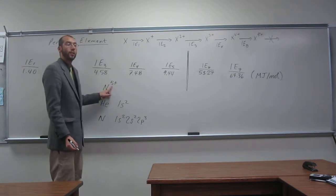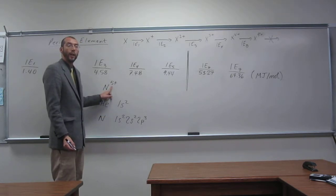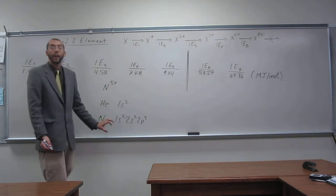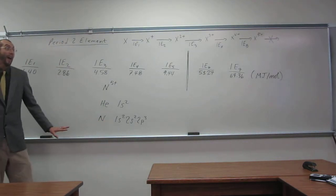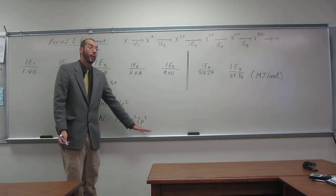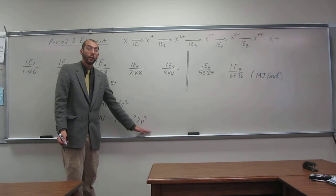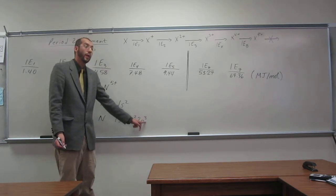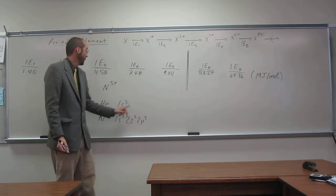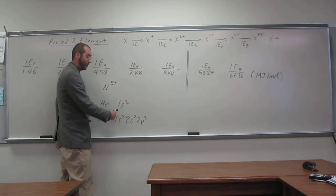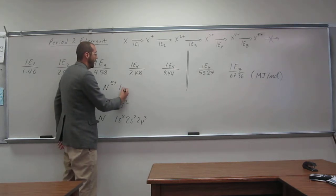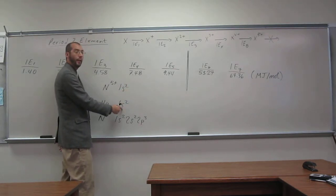So nitrogen plus 5 or 5 plus is going to be nitrogen without how many electrons? 5. So they're going to be the valence electrons, so we're removing 3 from the p orbitals, 2 from the s orbitals. So what do we get? Just 1s2. So is that equivalent to that? So we've got this thing being nitrogen.